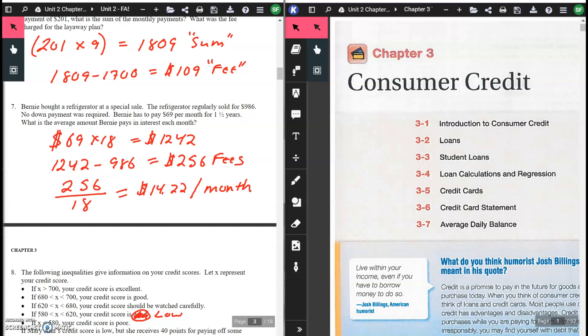$256 is your total amount. Now, take that $256 and divide it by 18 to figure out how much he's actually paying per month in interest. $256 divided by 18 equals $14.22 per month in interest and fees.